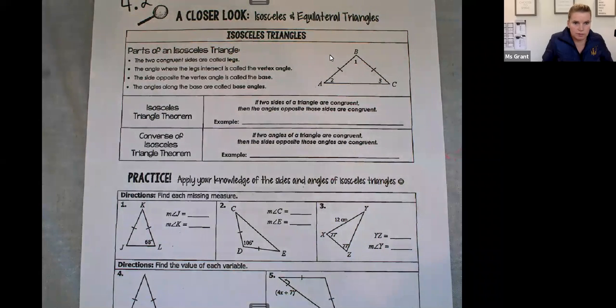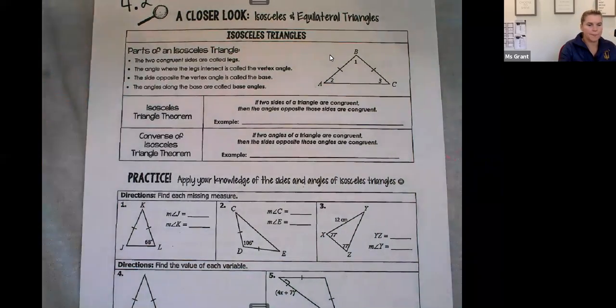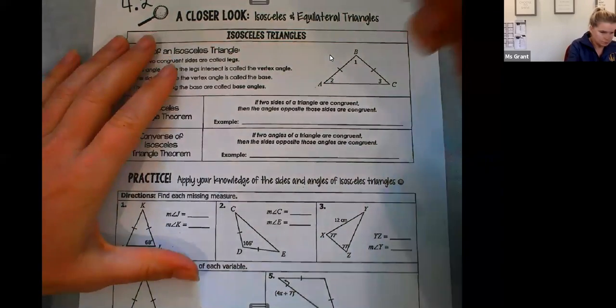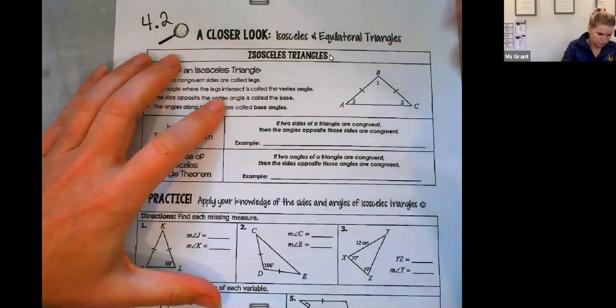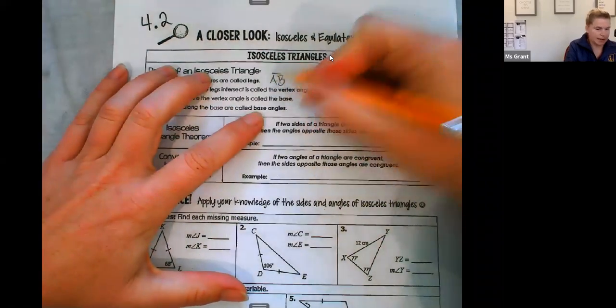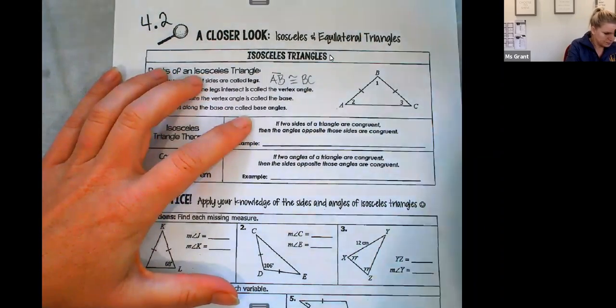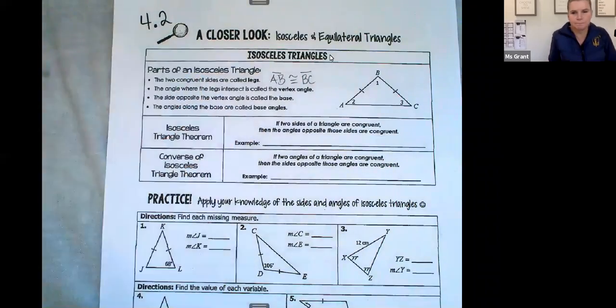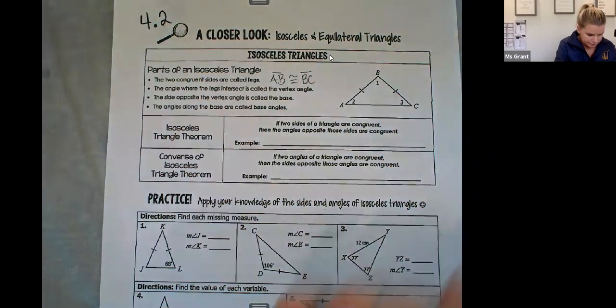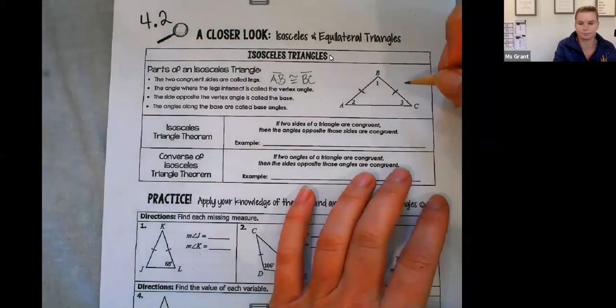Parts of an isosceles triangle. The two congruent sides are called legs. So that's going to be side AB is congruent to BC, right? These lines, one line here, one line here, those two sides are congruent.